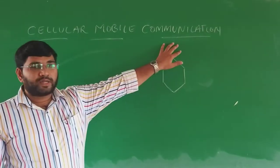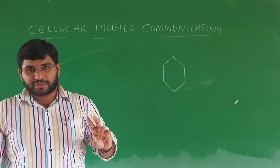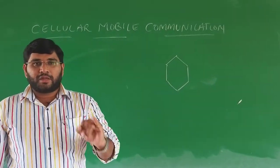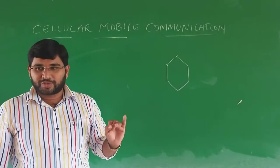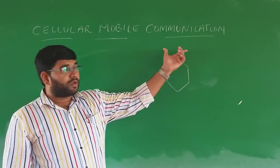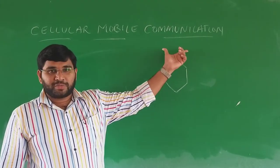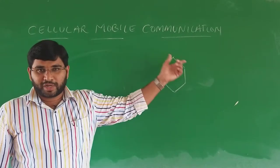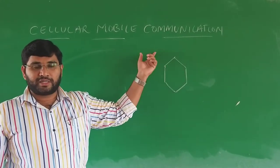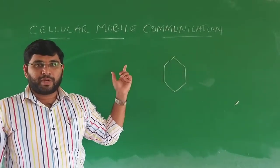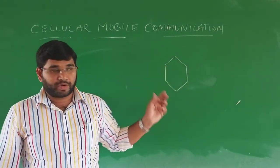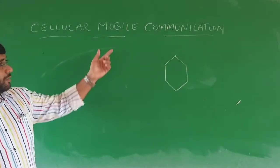Communication is done in two forms: through electricity, which is wired communication, and through radio waves, which is wireless communication. So information is transferred from one place to another place by means of wired communication or wireless communication.